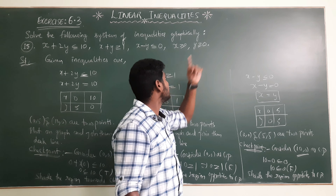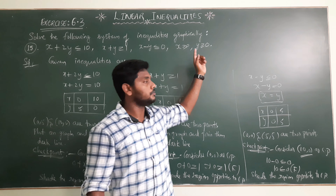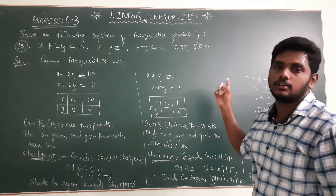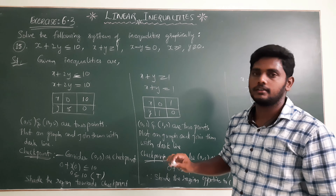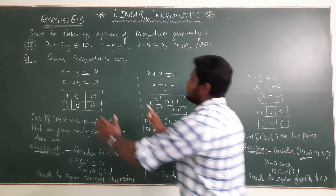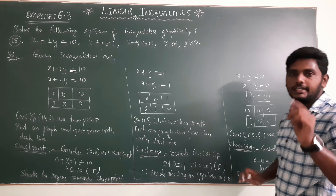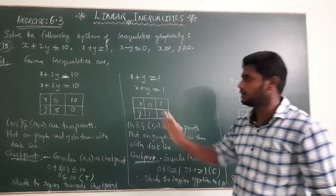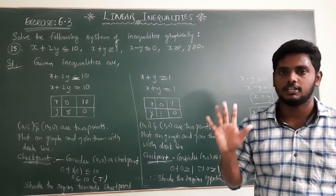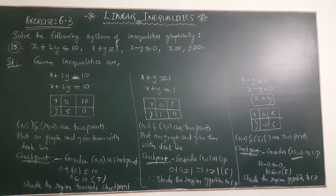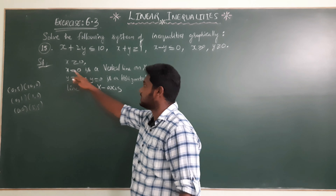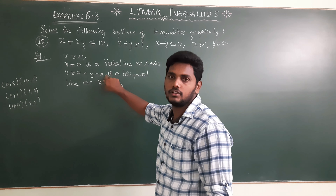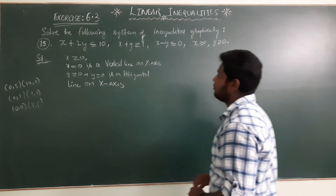The remaining inequalities are x ≥ 0 and y ≥ 0. x ≥ 0 means x = 0, which is a vertical line on the y-axis, and we shade the right side. y ≥ 0 means y = 0, which is a horizontal line on the x-axis, and we shade the upper side. These two together restrict the solution to the first quadrant. We need to write these steps individually one by one.